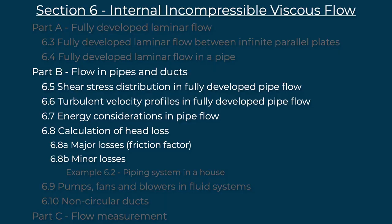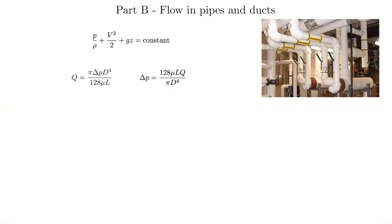So that'll really be the emphasis of where we're going with this material. Here's a breakdown of section 6, though there are so many subsections that I'm only showing a portion here. The white text is what we'll cover in this video — part B, flow in pipes and ducts. Essentially everything is leading us towards being able to calculate the head loss for a piping system. So now we're doing part B, flow in pipes and ducts.